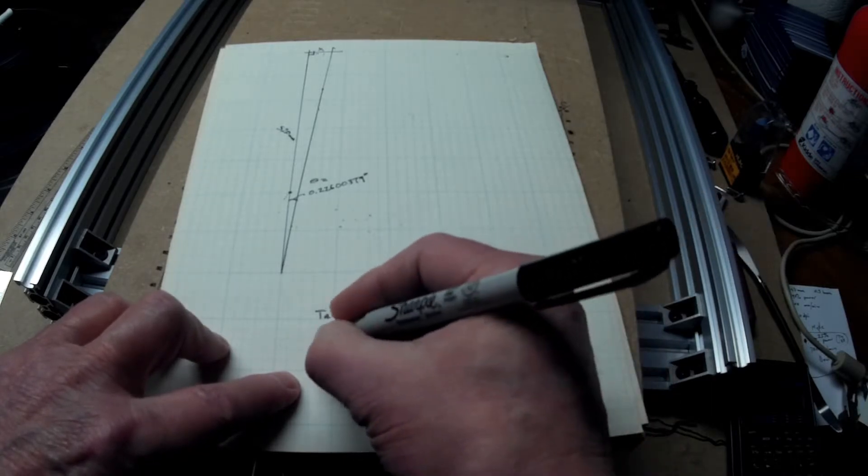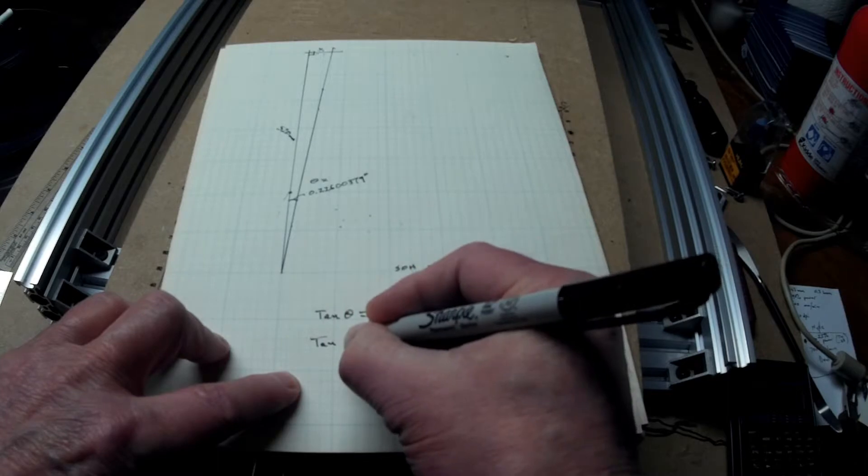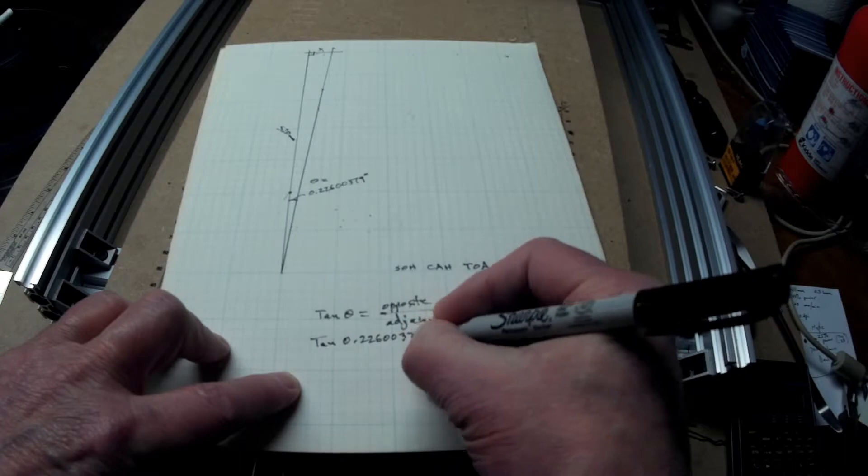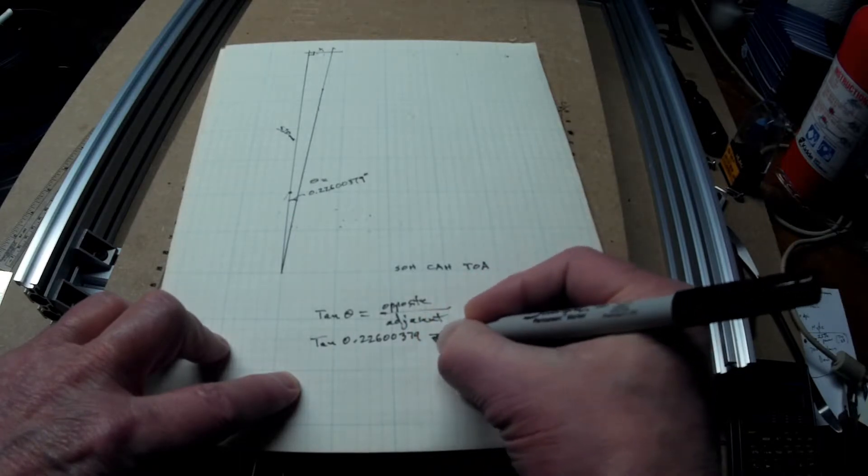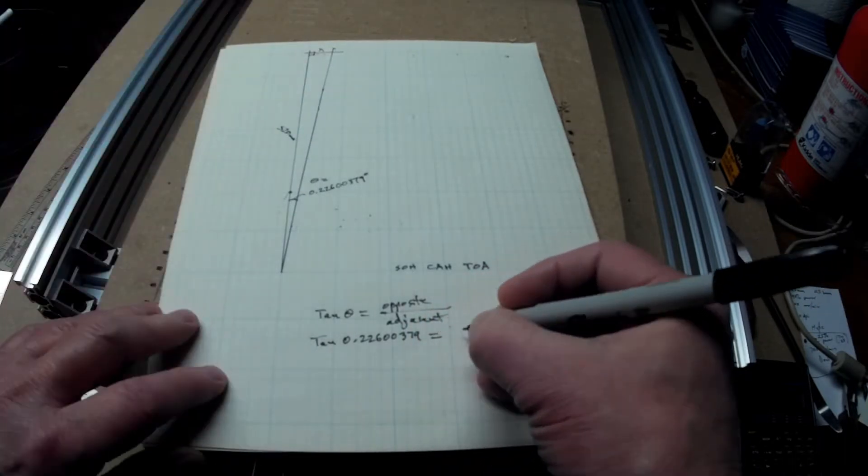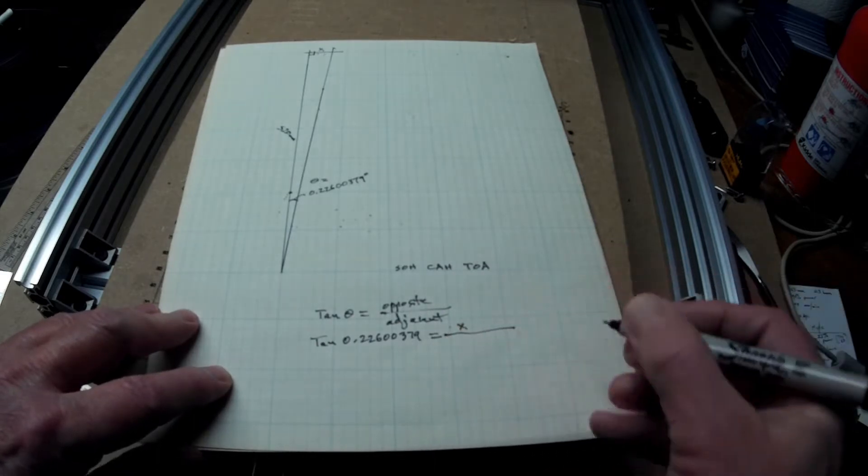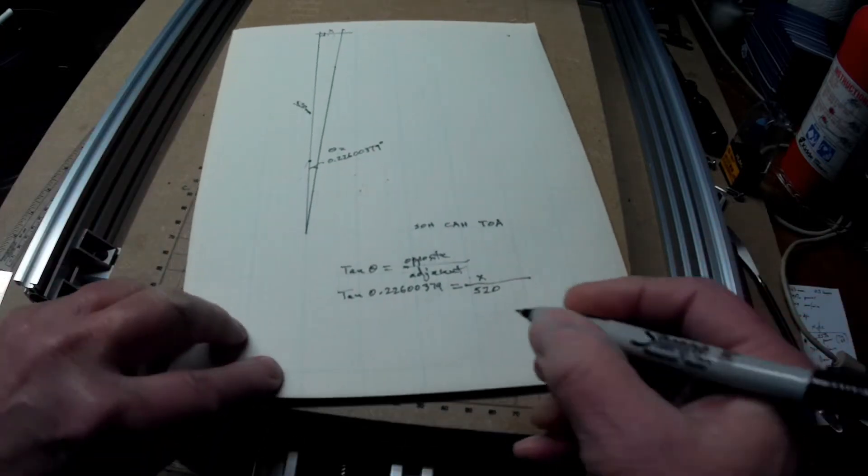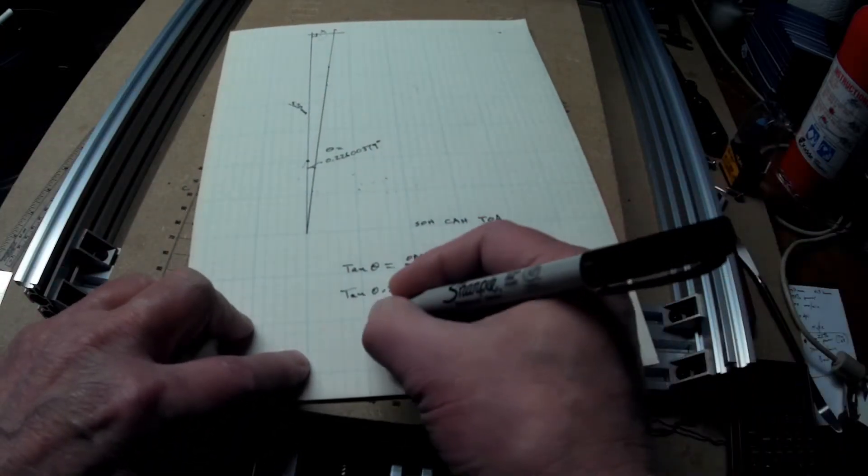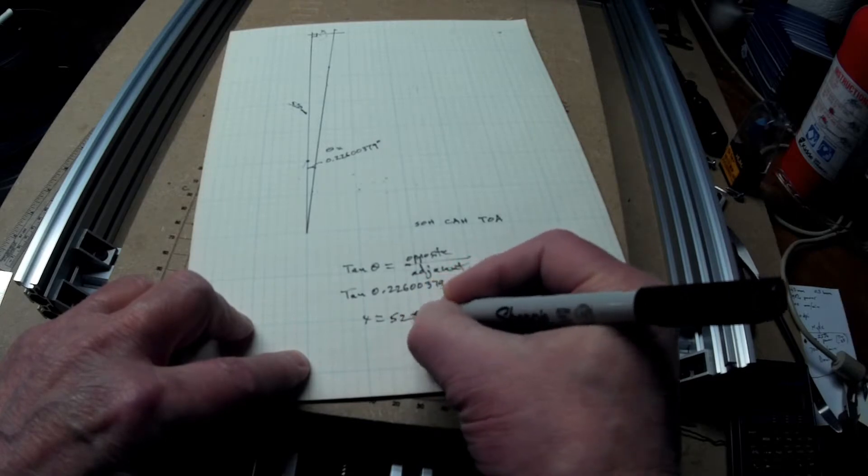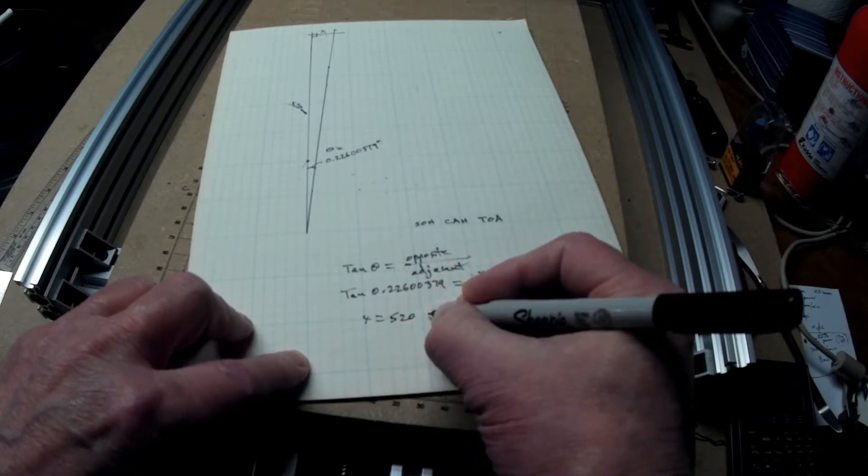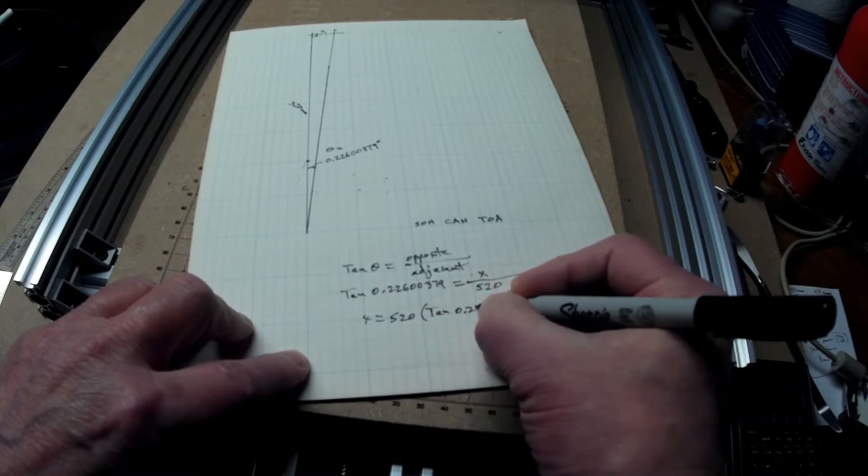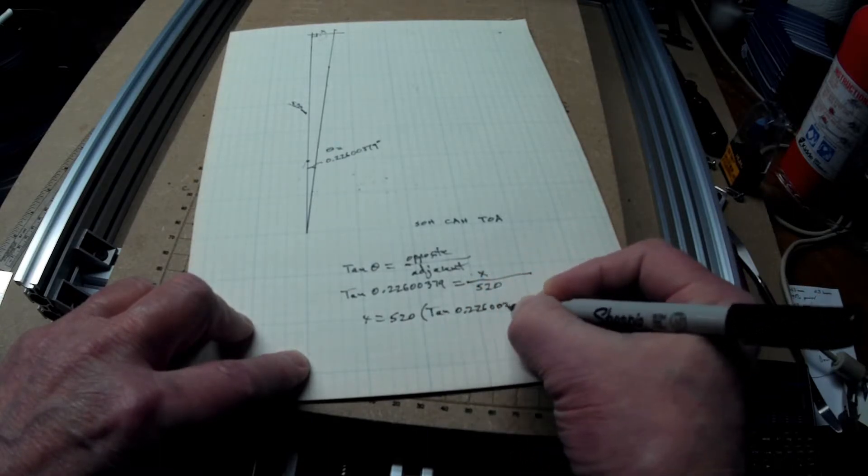So, tangent theta, that would be tangent of 0.22600379 equals opposite, which is x. That's what I don't know, over 520 millimeters. So, I get x equals 520 times tangent of 0.22600379.